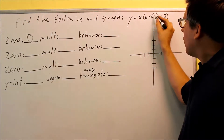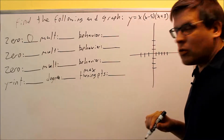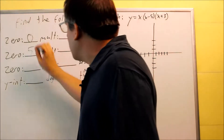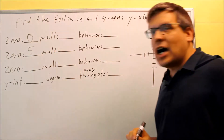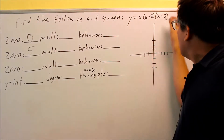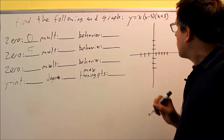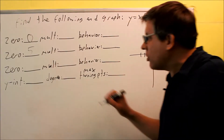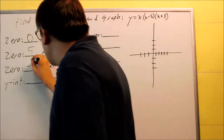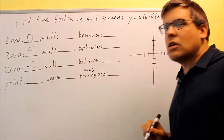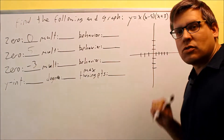Next, if I take x minus five and set it equal to zero, I would get five — that's the next zero. Then I have x plus three. Setting it equal to zero, I would get negative three. So negative three is the other x-intercept.